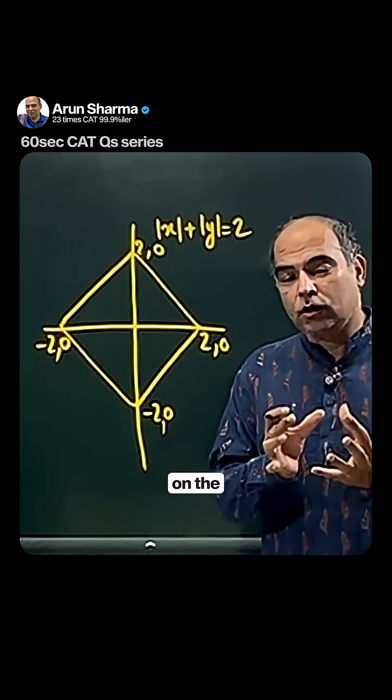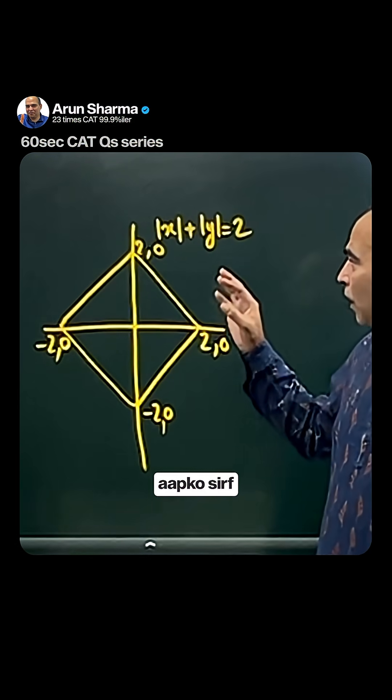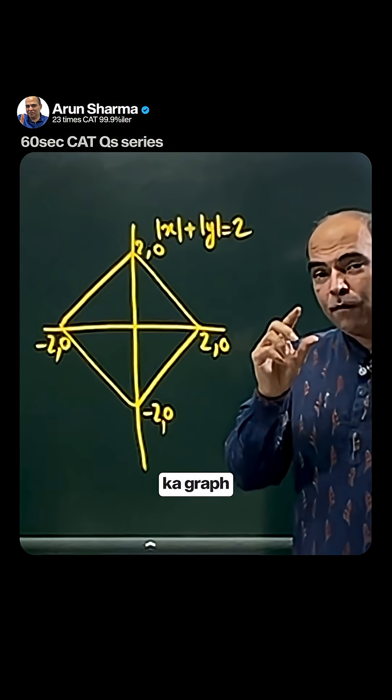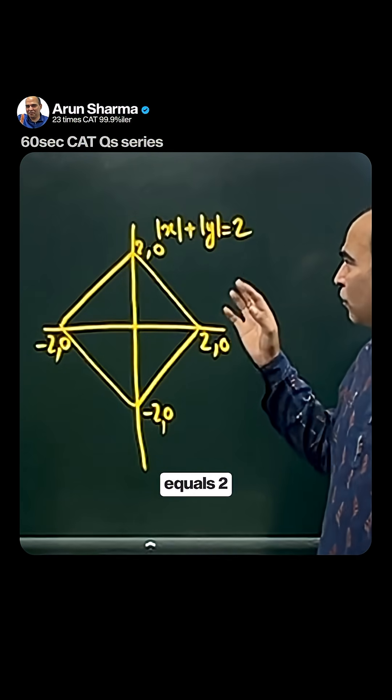You have to understand how to make the graph of |x| + |y| = 2. If you think about x value 2, then y value will be 0.